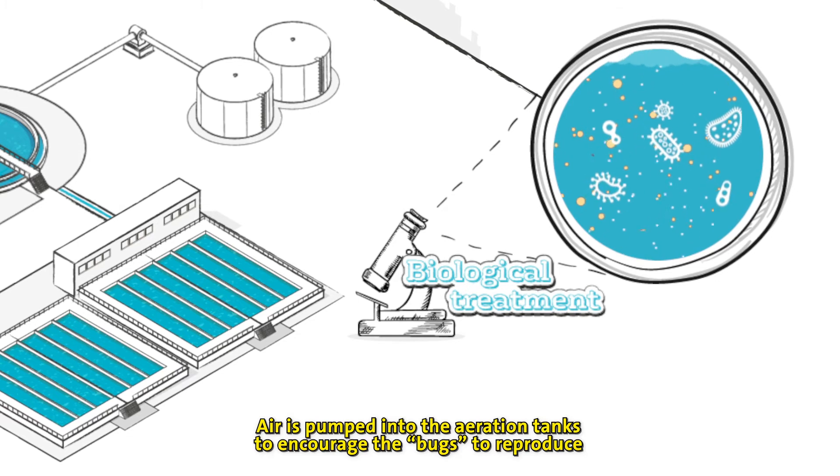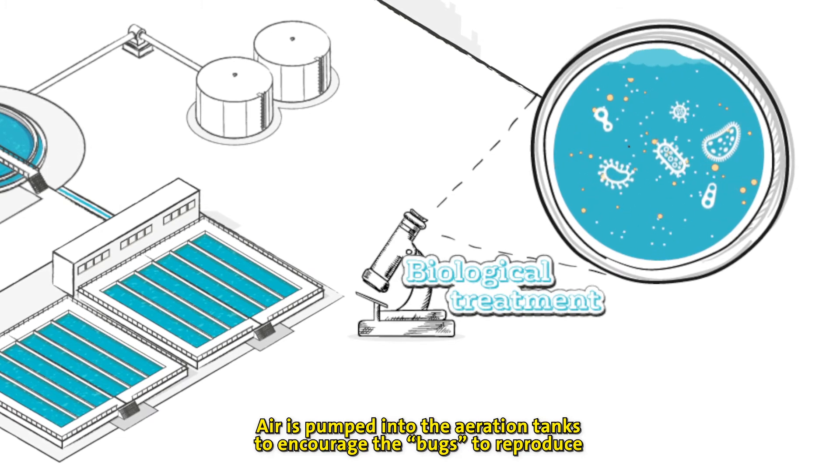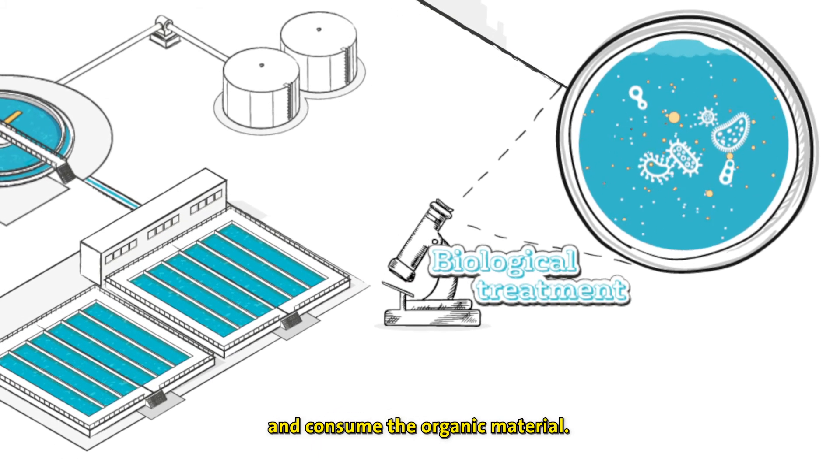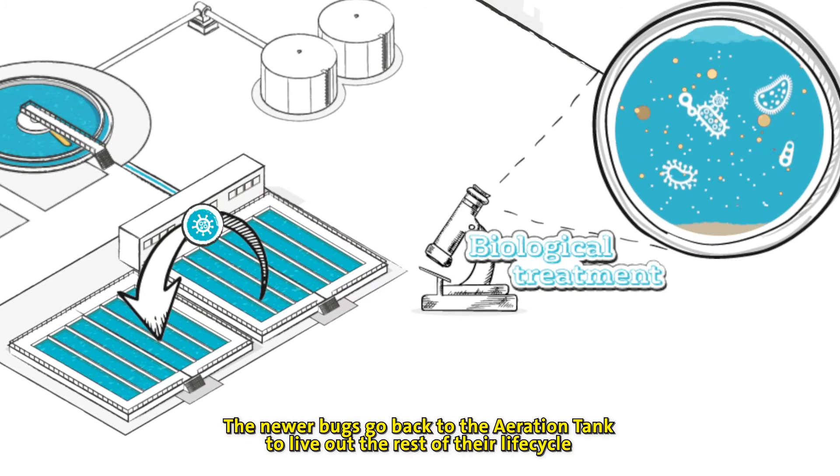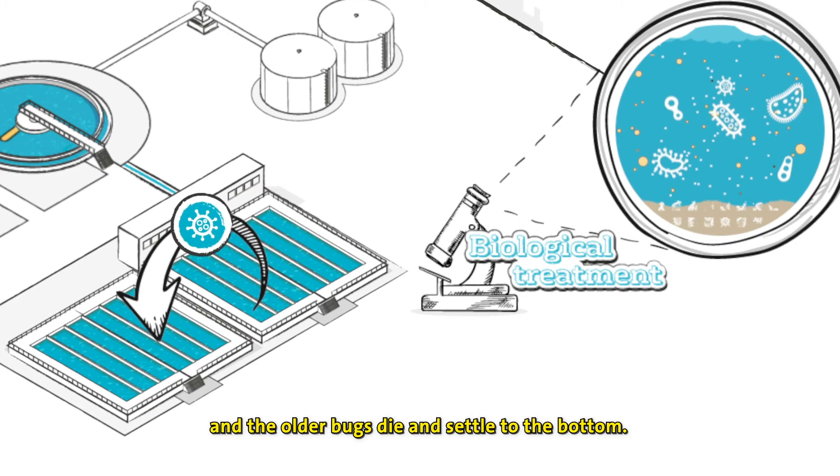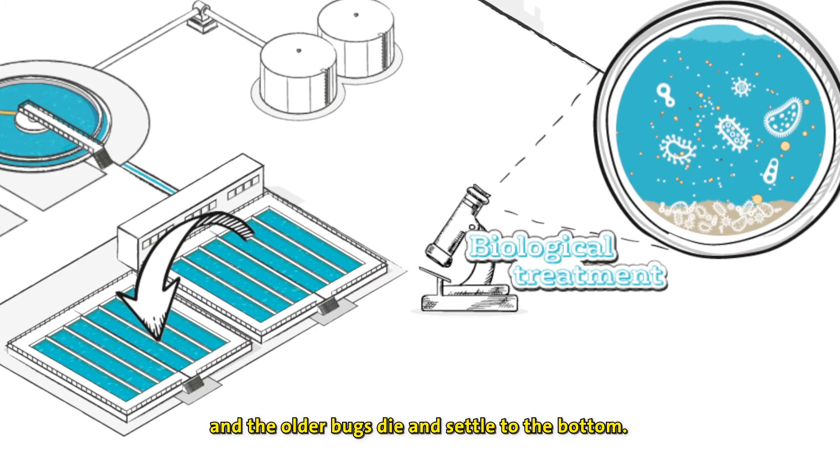Air is pumped into the aeration tanks to encourage the bugs to reproduce and consume the organic material. The newer bugs go back to the aeration tank to live out the rest of their life cycle, and the older bugs die and settle to the bottom.